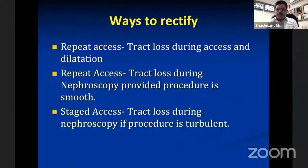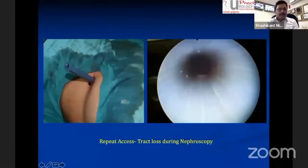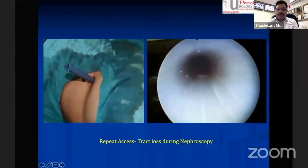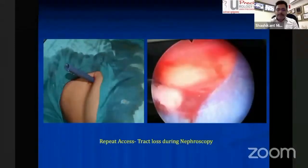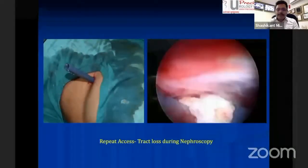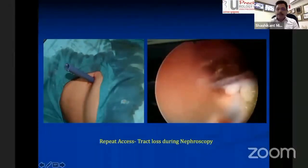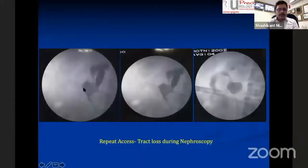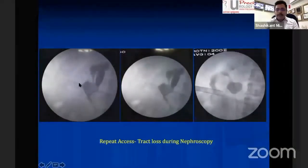Here is a case where my resident had already planned a tract and the procedure was going smoothly. He called me when, during nephroscopy, he found there was no system. When I did nephroscopy, the tract was clearly not there. This was the stone in the pelvis — you can see one calyx here and another calyx there. After retrograde pyelography, the system was not filling, probably because it had cut off, and the Amplatz sheath was somewhere outside the system.